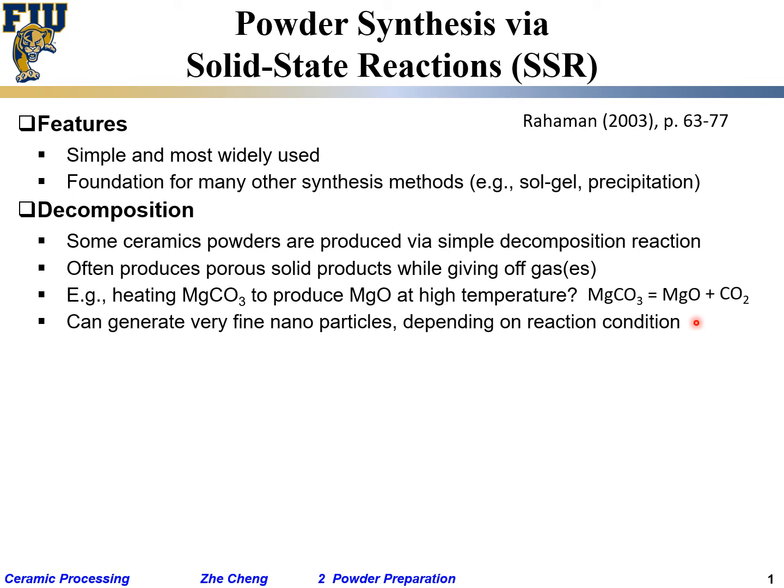Decomposition reactions can generate very fine nanopowder depending on the reaction conditions. If you do this decomposition at 2000°C, it's quite difficult to get nano particles because at that high temperature things easily glue or bond together. But if you control conditions in a certain fashion, you can get nanopowder — morphology depends on processing conditions.